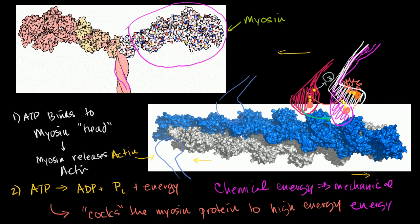The next question is: how do we turn on and off this situation? We have command over our muscles, so what can turn on or off this system of myosin essentially crawling up the actin?